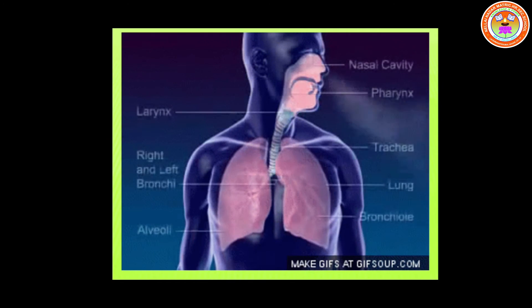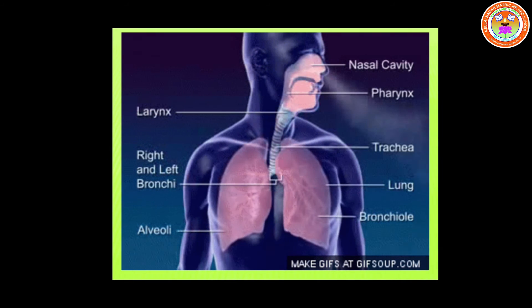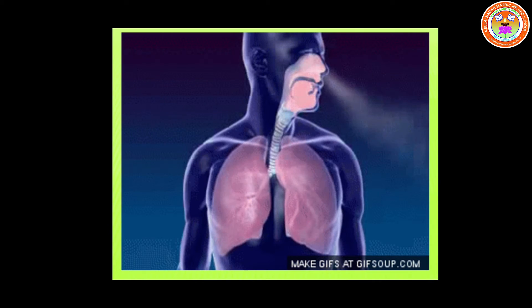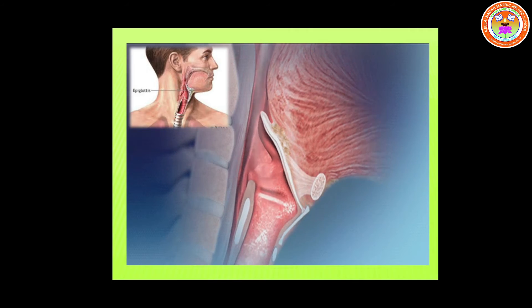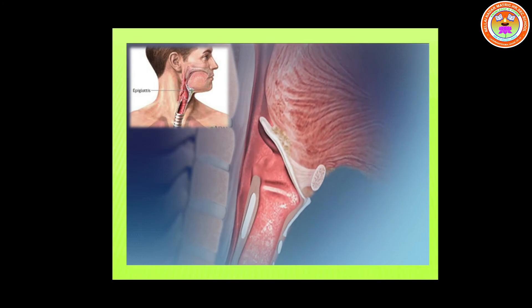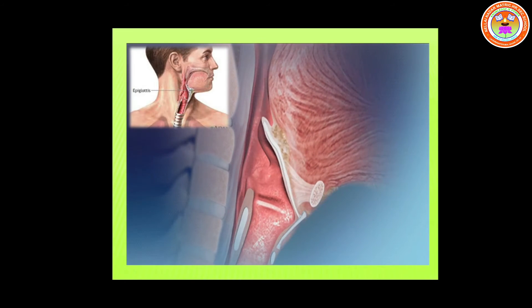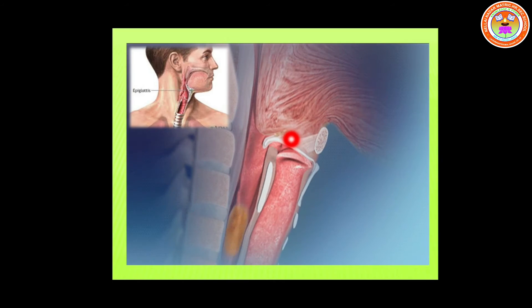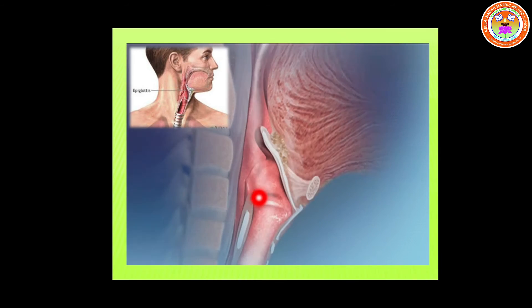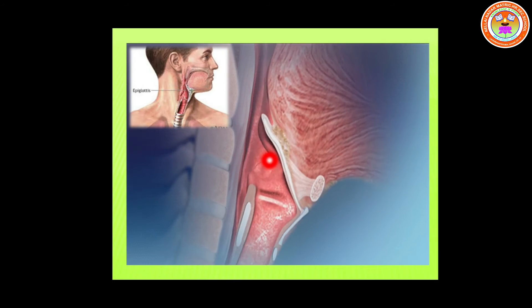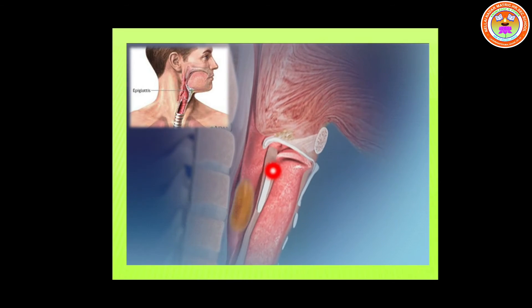Exchange of oxygen and carbon dioxide occurs between air in the lungs and the blood. The entry of food into the windpipe is prevented by a flap-like structure called the epiglottis. Here you can see the flap — it prevents the entry of food particles into the windpipe, which is the windpipe, and this is the food pipe. So the epiglottis prevents food from moving into the windpipe.